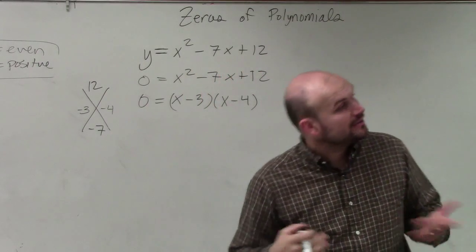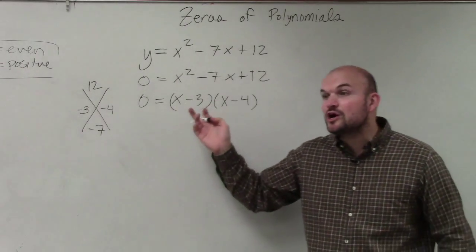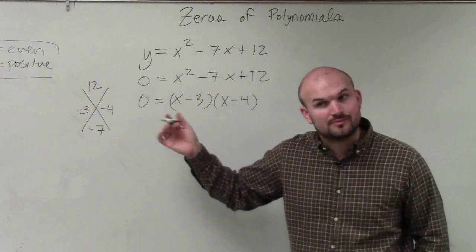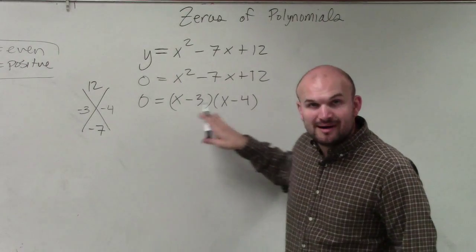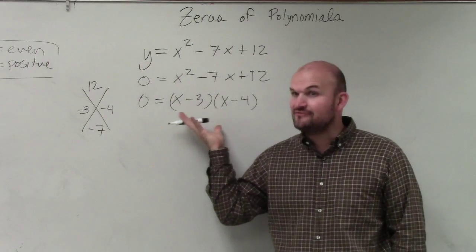Would everybody agree with me? And what's nice about factoring, when you have factoring set equal to 0, now you can apply the zero product property. So here are my factors, correct? My factors, because it's in factored form, these are my factors.